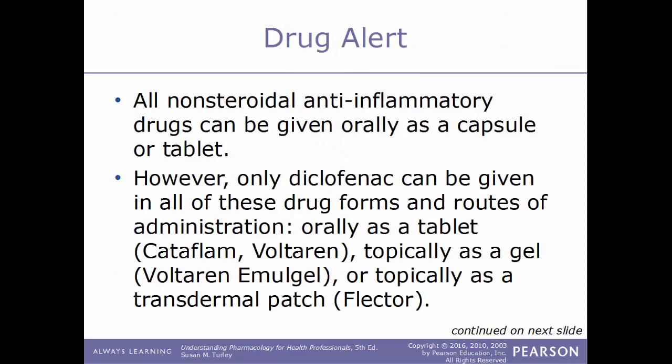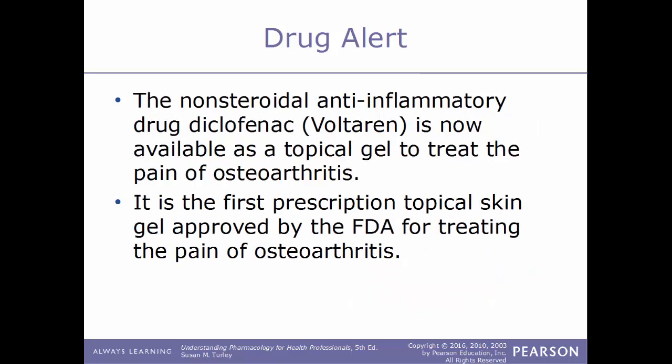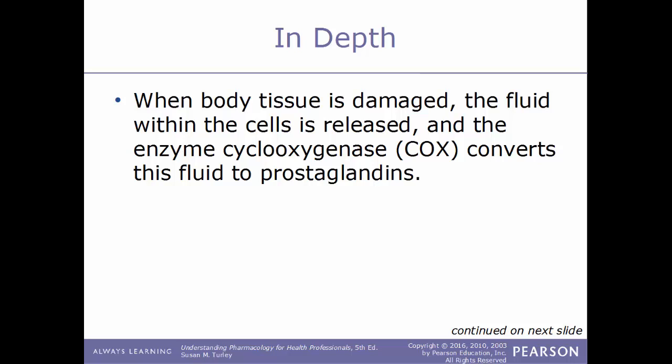All non-steroidal anti-inflammatory drugs can be given orally as a capsule or tablet. However, only diclofenac can be given in all drug forms and routes of administration. It can be given orally as a tablet such as Voltaren or Cataflam, topically as a gel such as Voltaren Emulgel, or topically as a transdermal patch such as Flector. Voltaren is now available as a topical gel to treat the pain of osteoarthritis — it is the first prescription topical skin gel approved by the FDA for treating osteoarthritis pain.